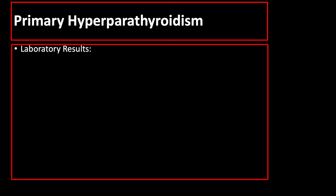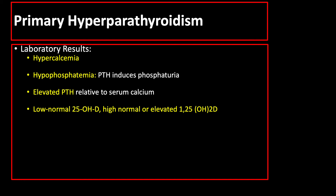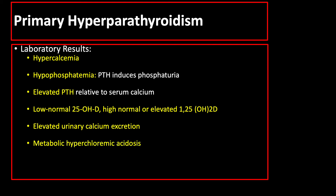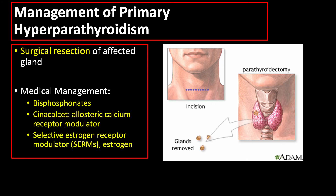The typical laboratory picture of a patient with primary hyperparathyroidism includes hypercalcemia, hypophosphatemia because parathyroid hormone induces phosphaturia or renal excretion of phosphorus, elevated parathyroid hormone relative to serum calcium, low normal 25-hydroxyvitamin D, high normal or elevated 1,25-dihydroxyvitamin D, elevated urinary calcium excretion, metabolic hyperchloremic acidosis, and elevated serum alkaline phosphatase especially in severe cases. Management may include surgical resection of the affected gland and/or medical management.